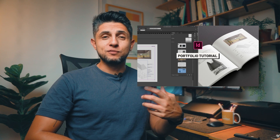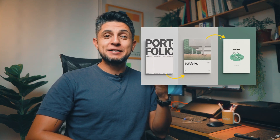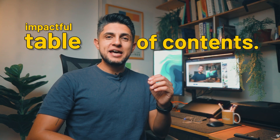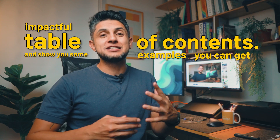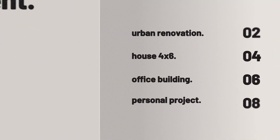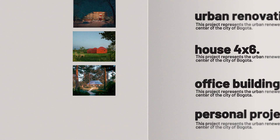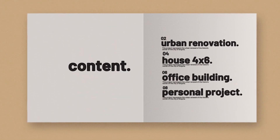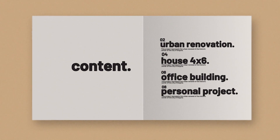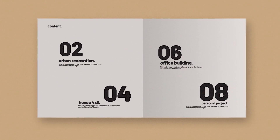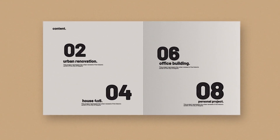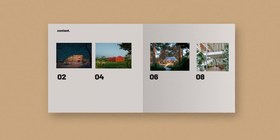In the past, we already talked about covers and also about portfolio spreads. Here, I want to show you how to create an impactful table of contents and show you some examples you can get inspiration from. So in a typical table of contents, we have the page number, the title of each chapter or project, sometimes a brief description of each project, and also an image or logo of each project. You can alternate the importance of each of these elements according to your design style, choosing whether to emphasize chapter names, page numbers, or project images.